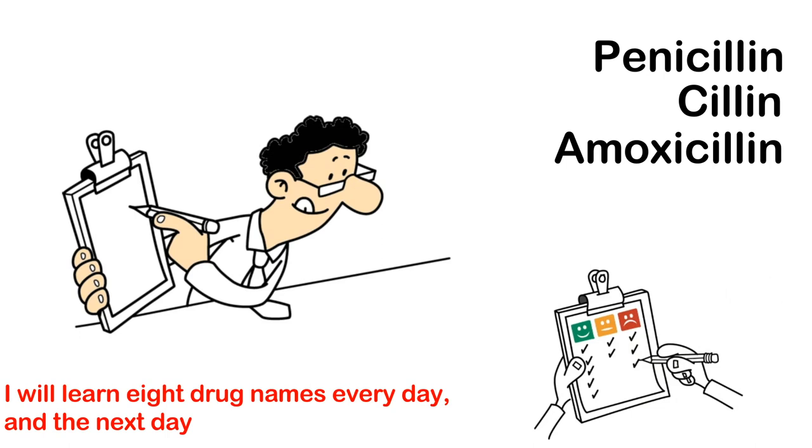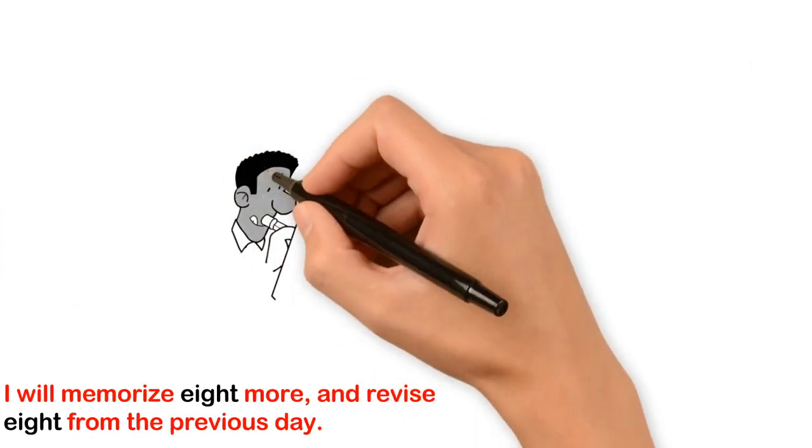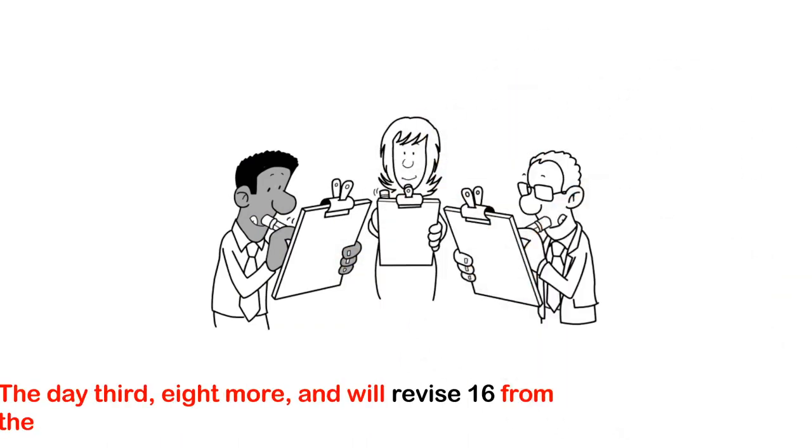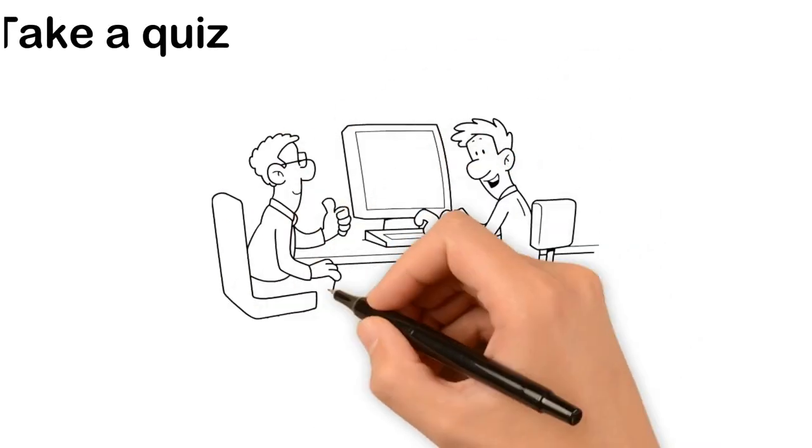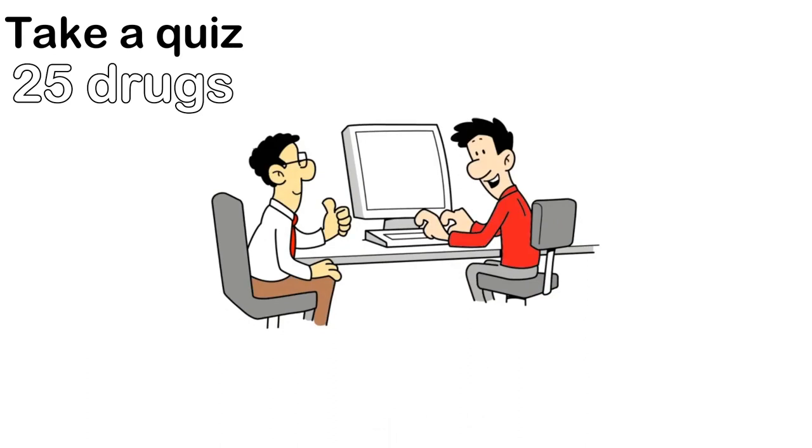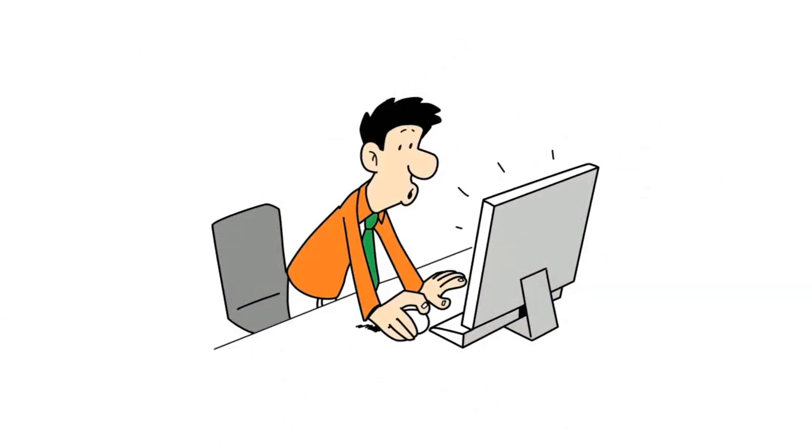I will learn eight drug names every day and the next day I will memorize eight more and revise eight from the previous day. Day three, eight more and will revise 16 from the first two days. Day three, take a quiz of 25 drugs. I have these quizzes in my channel for you to practice. This method will help you memorize 200 drug names in 25 days.